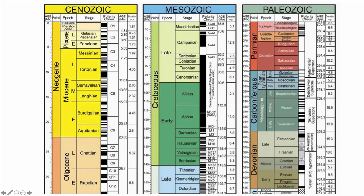Basically, what we want to understand is how this timescale that you're looking at right now, which is defined by the International Commission on Stratigraphy, is built. Why do we define the Neogene, the Miocene, or the Messinian, the way we do? How do we come up with ages? And perhaps just as important, why are those ages changing? Why is this a constantly evolving timescale?